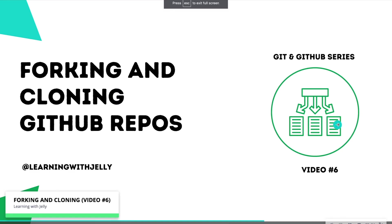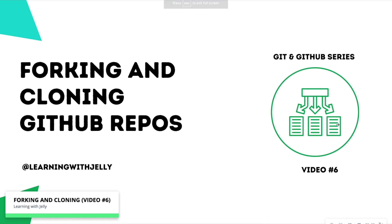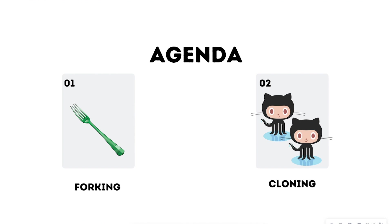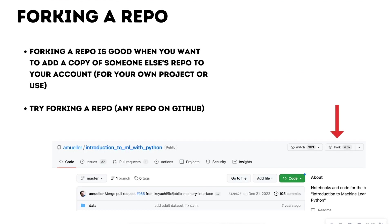Hello everyone, and welcome back to Learning with Jelly. Today is video six in our Git and GitHub series, all about forking and cloning GitHub repos on our journey to Git. Our agenda for today is we're going to talk about what forking is, what cloning is, and the differences between the two.